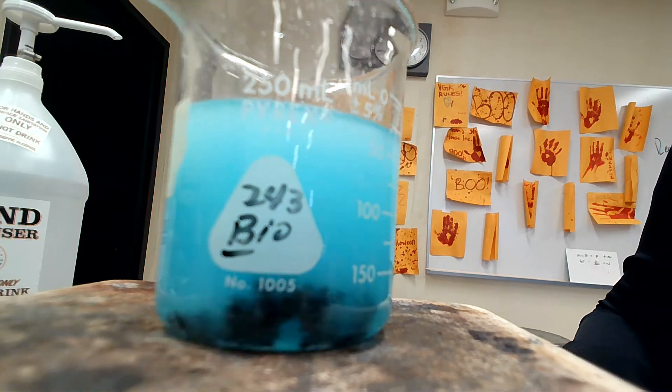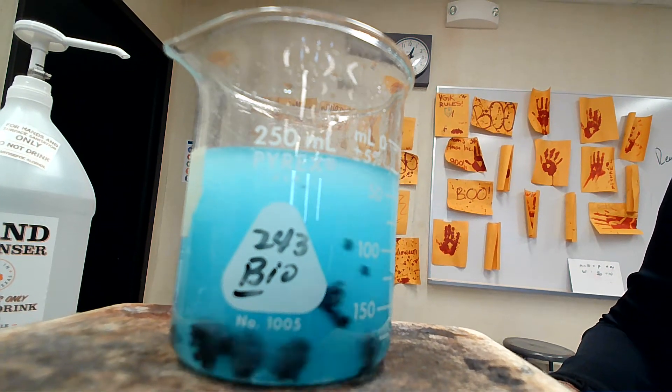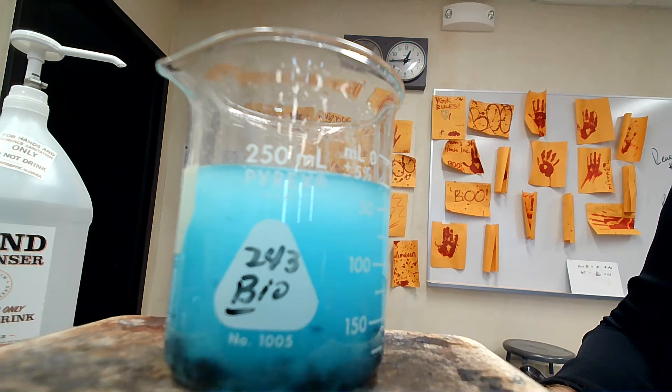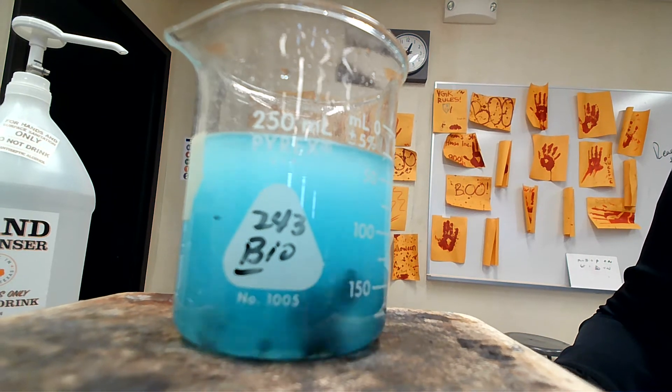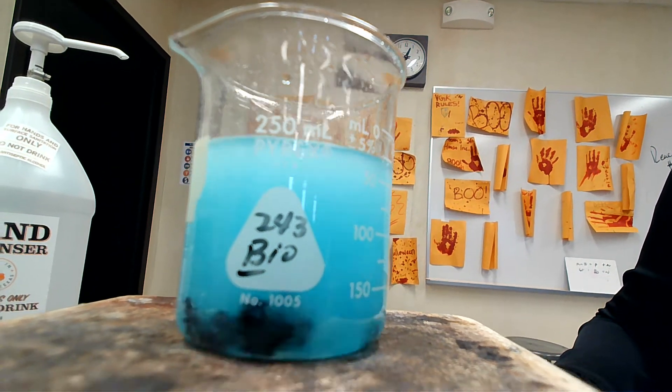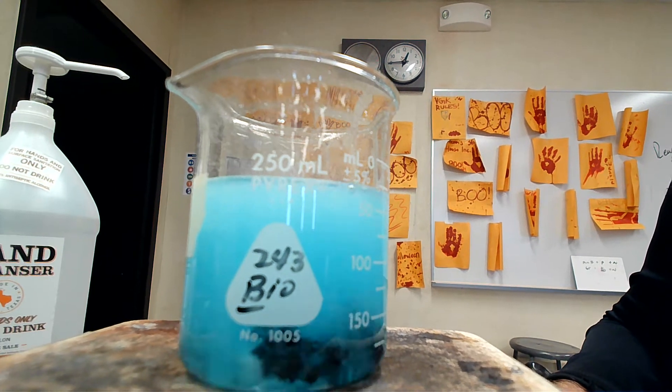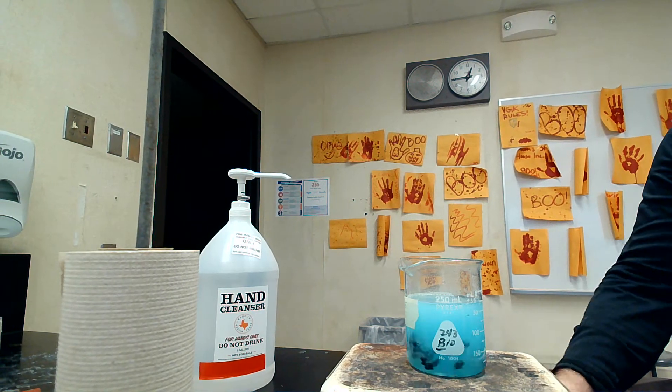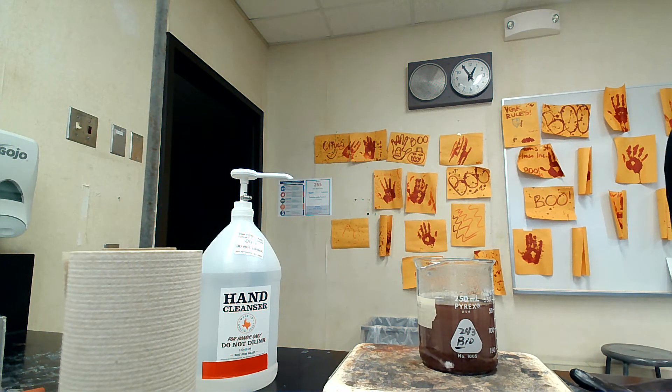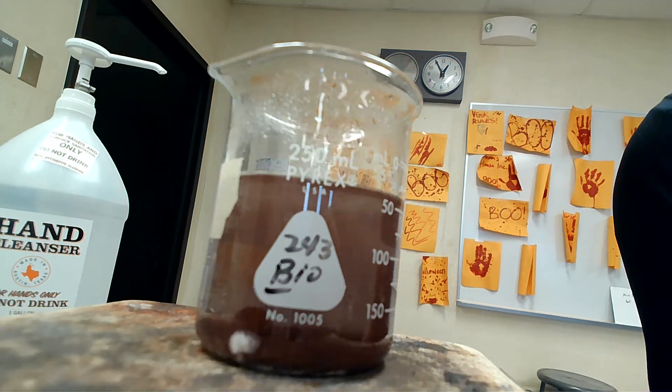The solution is going to go from greenish to clear once all the copper has reacted. It's a single replacement reaction. Our end goal is to figure out how much copper we're going to get out of it using our stoichiometry. You can see the copper is starting to settle and it's clearing up top.